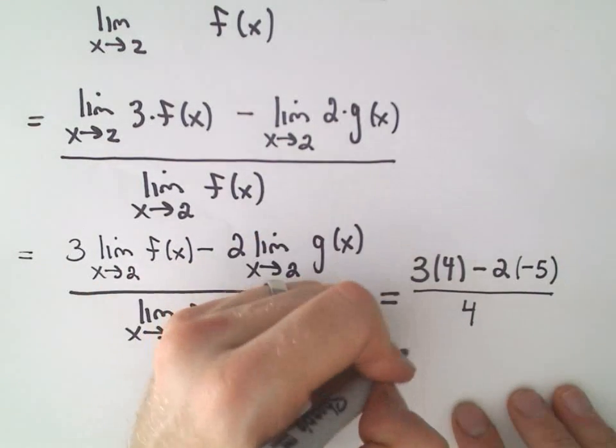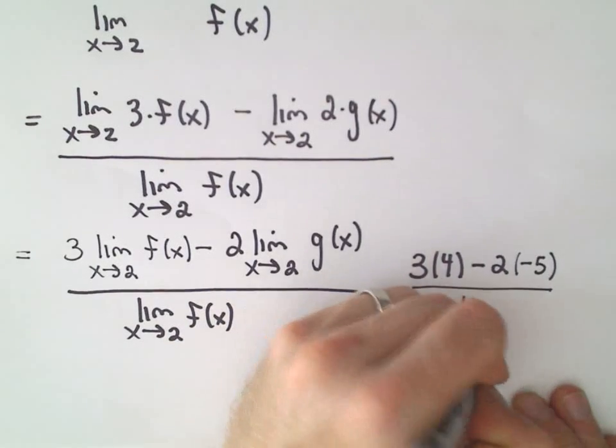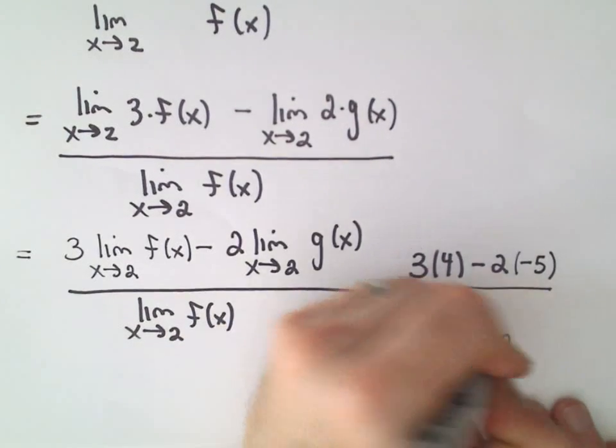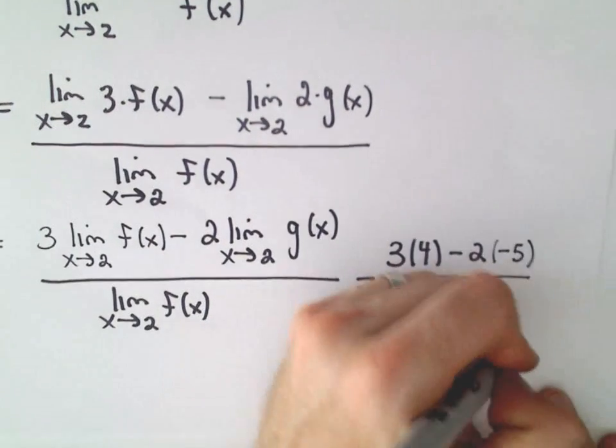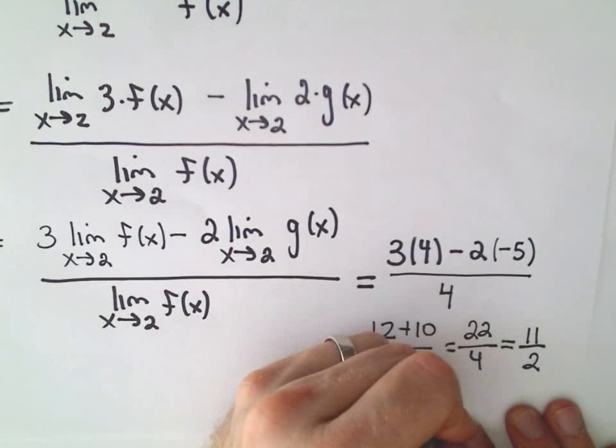3 times 4 is 12, negative 2 and negative 5 is positive 10, all over 4. That's 22 over 4, which we could reduce, we could make that 11 over 2, or I guess that's 5 and a half.